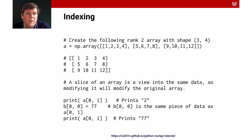A slice of an array is a view into the same data so that changing something in the slice will modify the original array. If we print a square bracket 0 comma 1 then it will print the number 2. If we do b square bracket 0 comma 0 equals 70 then we will change the same data as we would do on the full array. It's a call by reference.